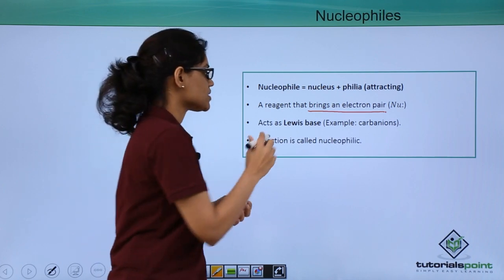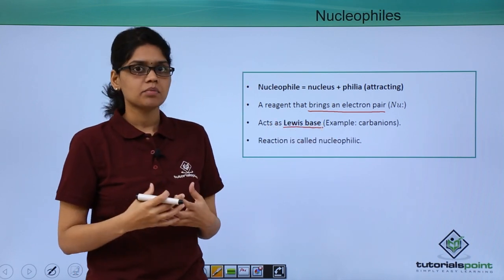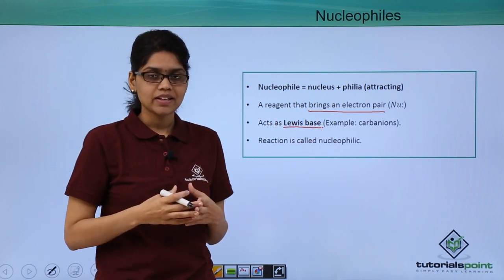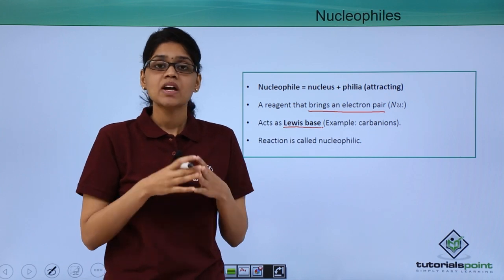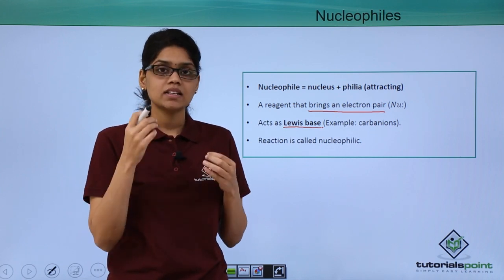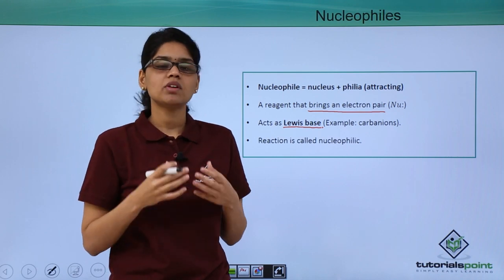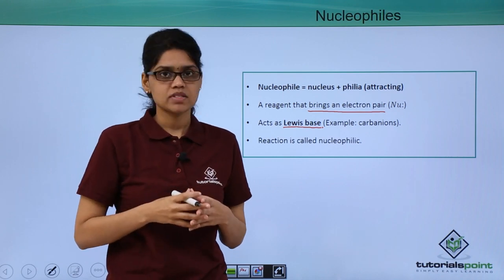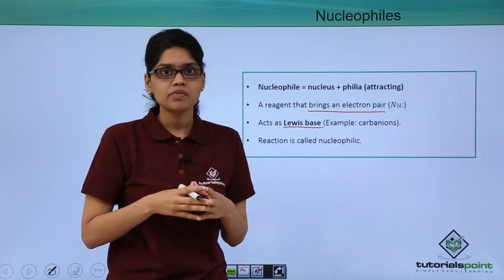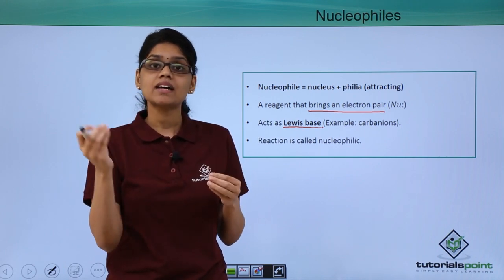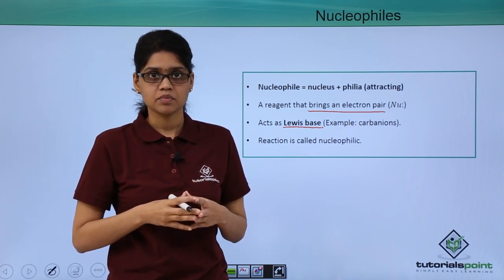And thereby it acts as a Lewis base. A typical example of a nucleophile is carbanions, as we have discussed previously, where carbon has a negative charge, making it a charged species capable of acting as a Lewis base. Any reactions in which a nucleophile takes part or attacks another reactant are called nucleophilic reactions.